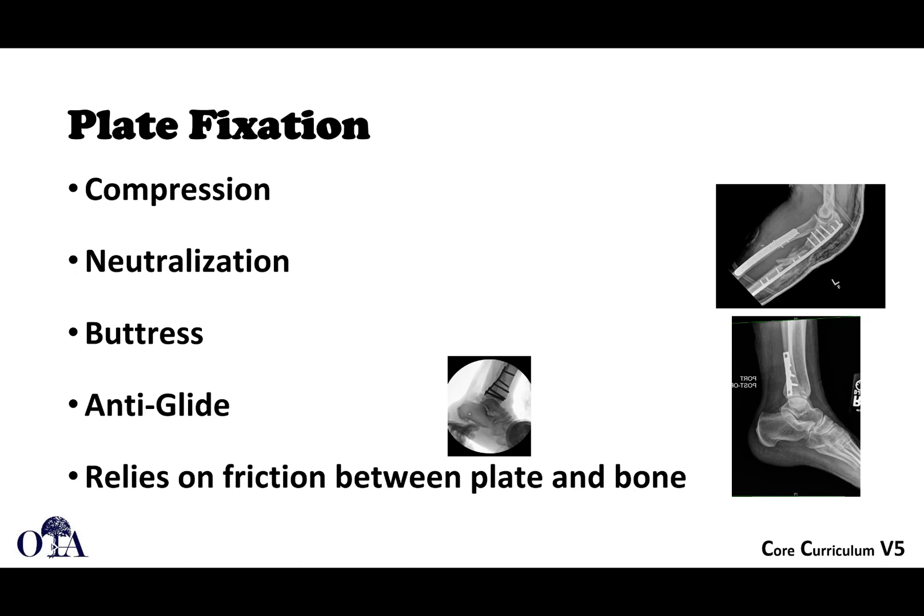When it comes to plating techniques, there's no such thing as a dedicated 'neutralization plate' or 'buttress plate' as a physical object — these are plate functions. A plate can function in compression, as a neutralizing plate protecting a lag screw against rotational forces, as a buttress plate to prevent shear, or as an anti-glide plate. In these contexts the construct relies on friction between the plate and bone.